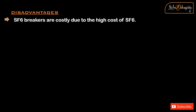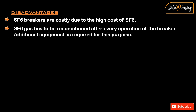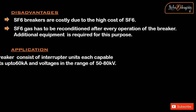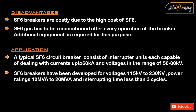Disadvantages: SF6 breakers are costly due to the high cost of SF6. SF6 gas has to be reconditioned after every operation of the breaker, and additional equipment is required for this purpose. Application: A typical SF6 circuit breaker consists of interrupter units each capable of dealing with currents up to 60 kA and voltages in the range of 50 to 80 kilovolts. SF6 breakers have been developed for voltages 115 kV to 230 kV, power ratings 10 MVA to 20 MVA, and interrupting time less than 3 cycles.